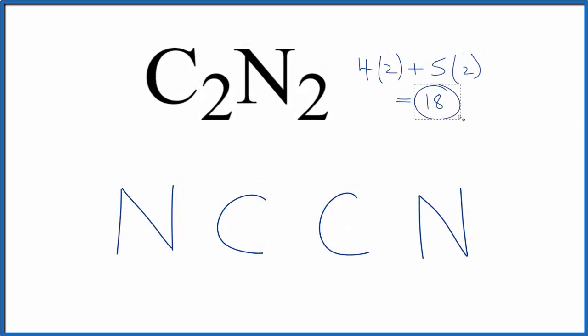We have a total of 18 valence electrons. First, we'll place a pair of electrons between the atoms to form the chemical bonds. Next, we'll complete the octets on the outside atoms, the nitrogens. So we've used all 18 valence electrons.